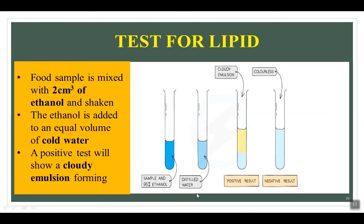For the test for lipids, grind the food with distilled water using a mortar and pestle. Unlike the other tests, do not filter the solution when testing for lipids. Transfer 2 cm³ of the food solution to a test tube and add ethanol, then give it a quick shake so the fats dissolve in the ethanol. Then add an equal volume of cold water and shake again. If lipids are present, the fat will become visible and form a cloudy white emulsion.